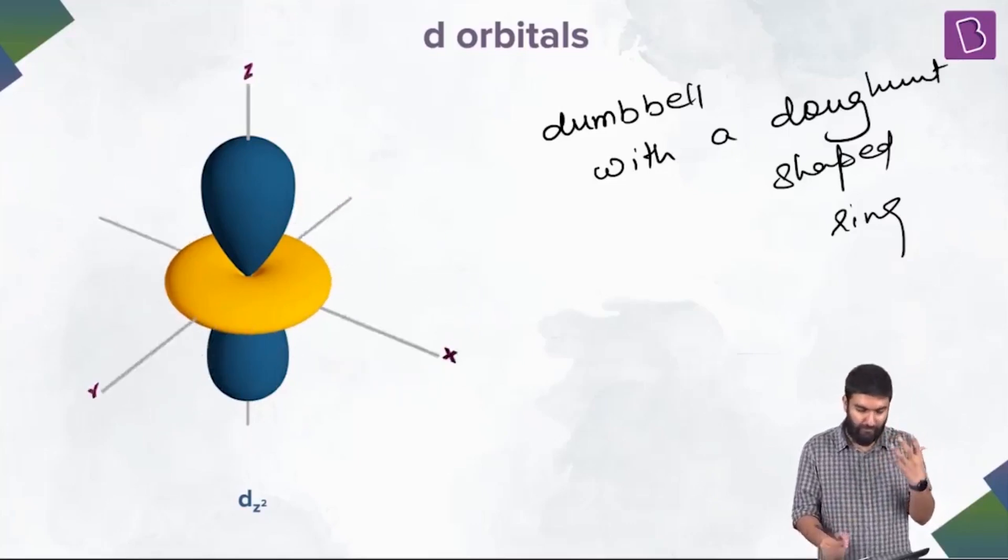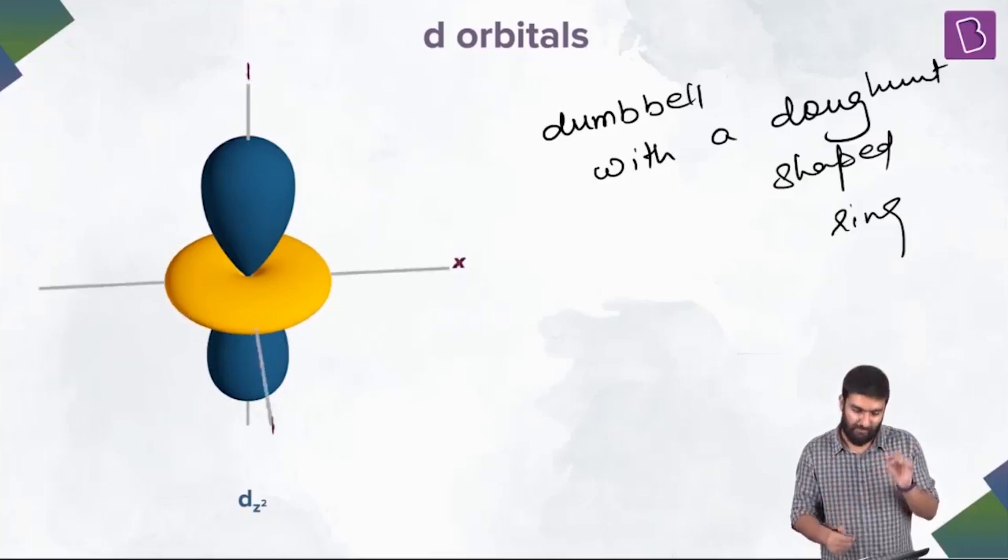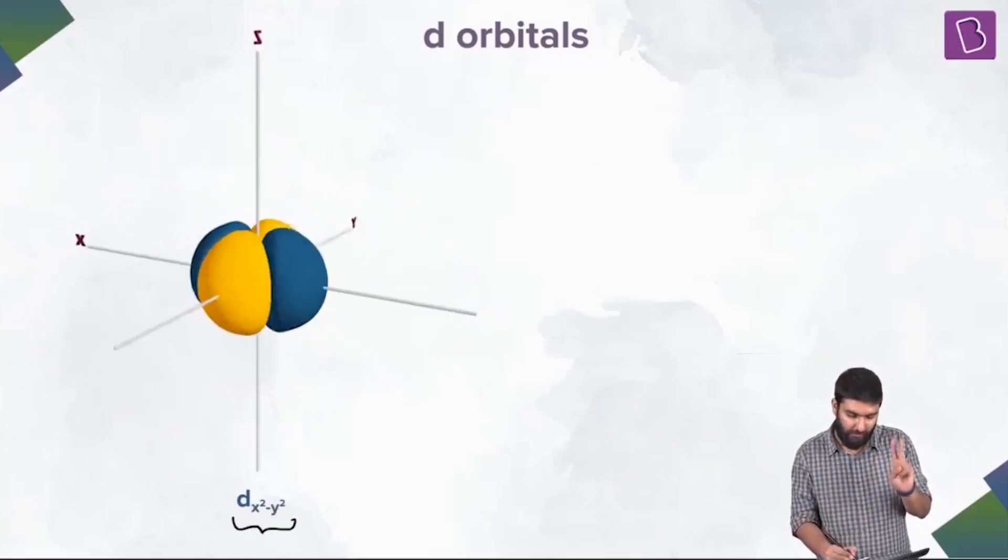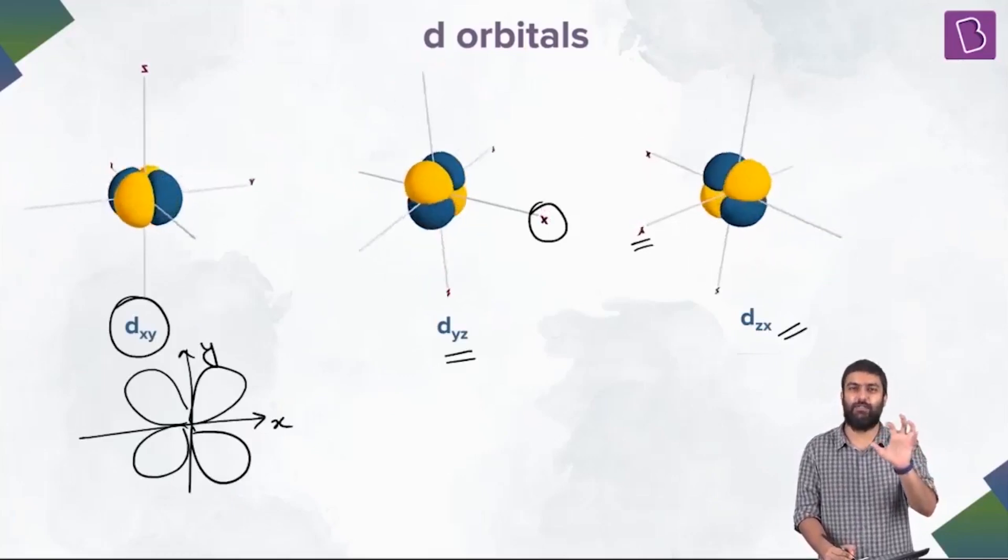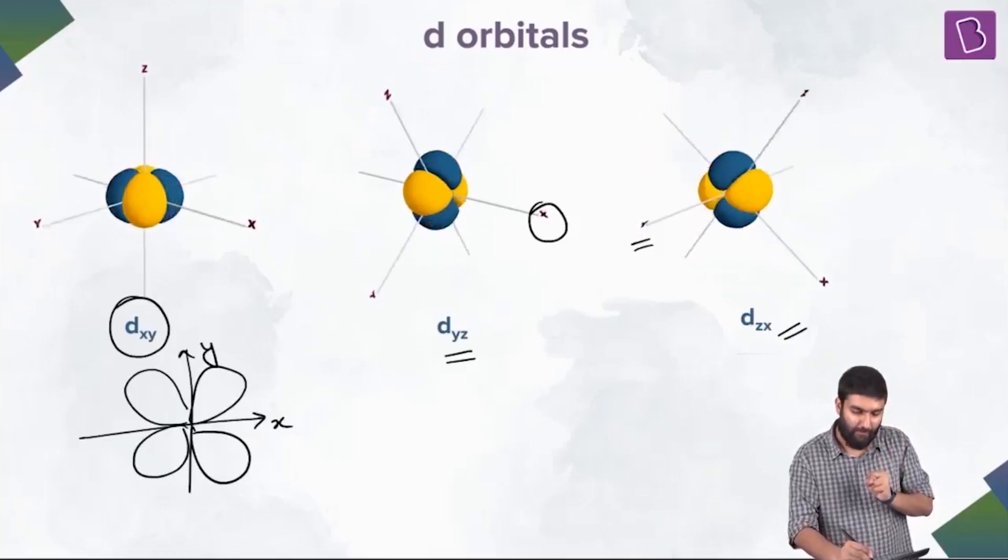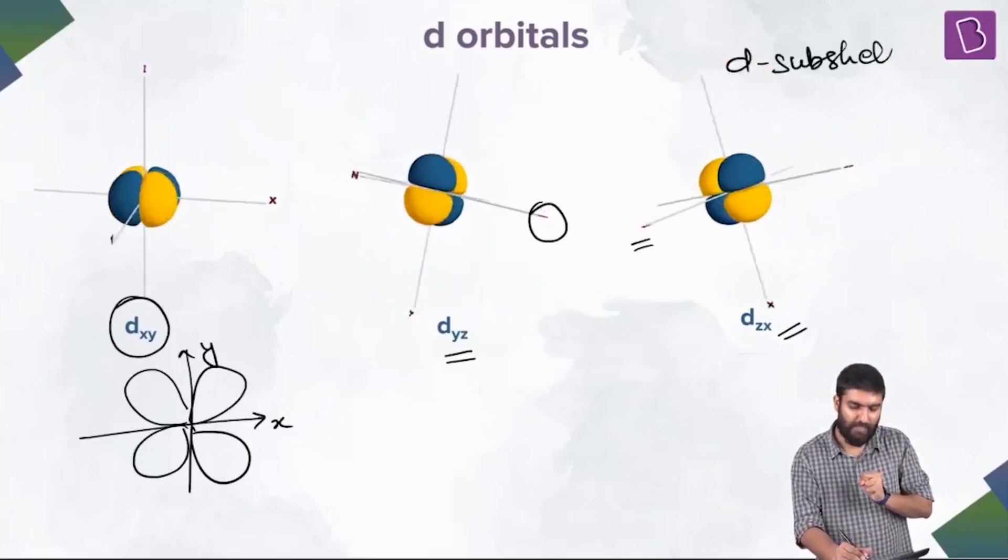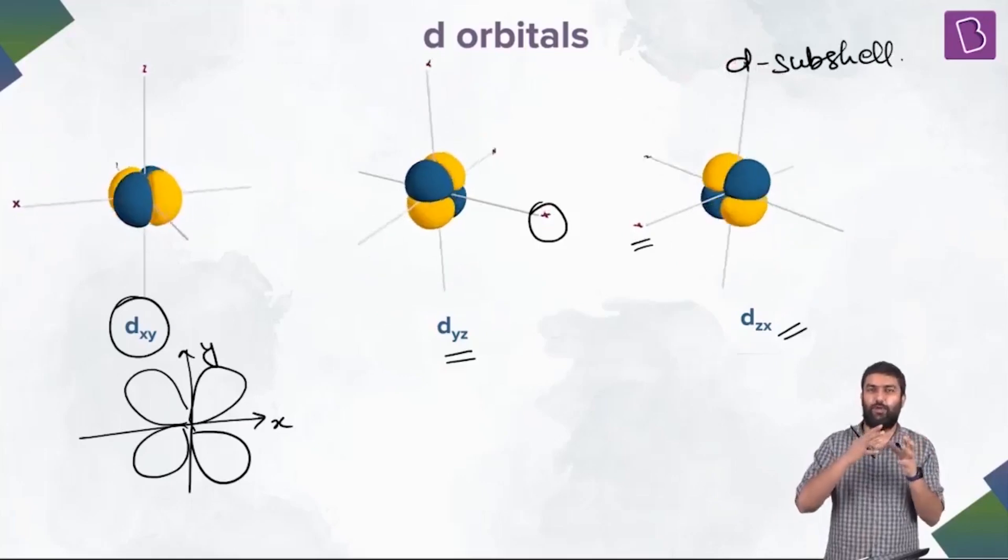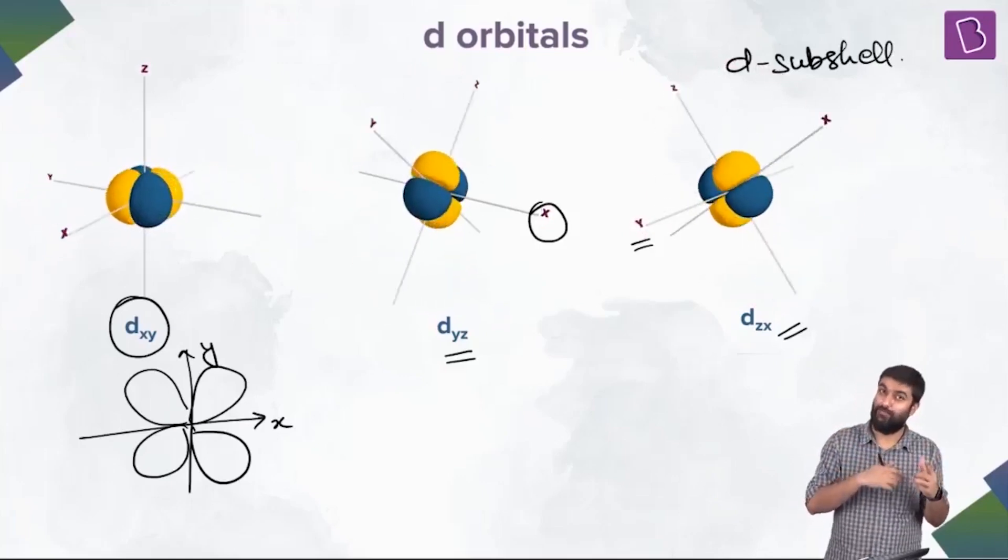So with that, these were the basic, basic orbitals. S, P, D. Now think about it. One, two, three, four, five. These five orbitals collectively make the D subshell. What was the shape of D orbitals? Double dumbbell. Except dz squared.